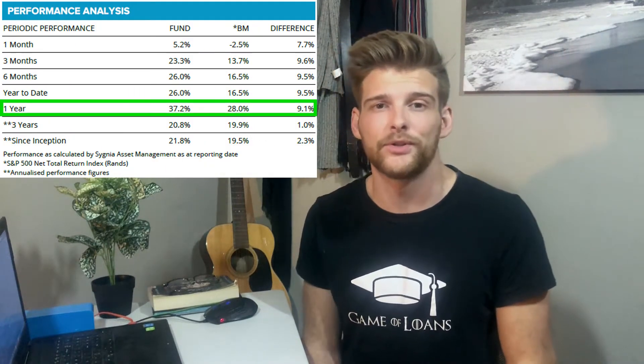The full name is the Sygnia Fourth Industrial Revolution Global Equity Fund — I'll just call it the Sygnia ETF for now. Over the past year it's made 37.2% growth and their benchmark was only 28%, so they overshot their benchmark. On Sygnia's website you can find the ETF's fact sheet showing the history, past growth, expense ratio, and investment strategy.